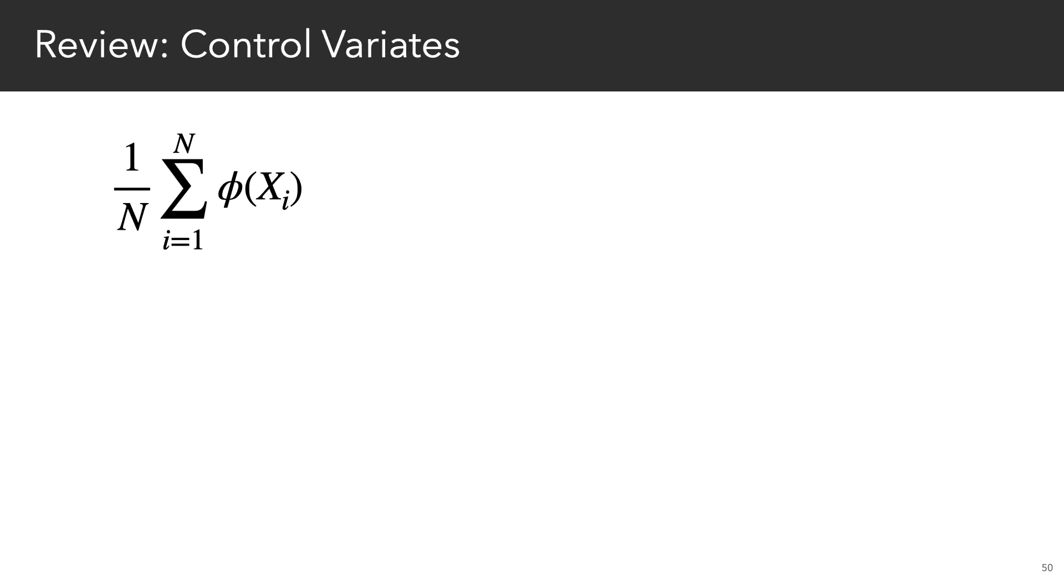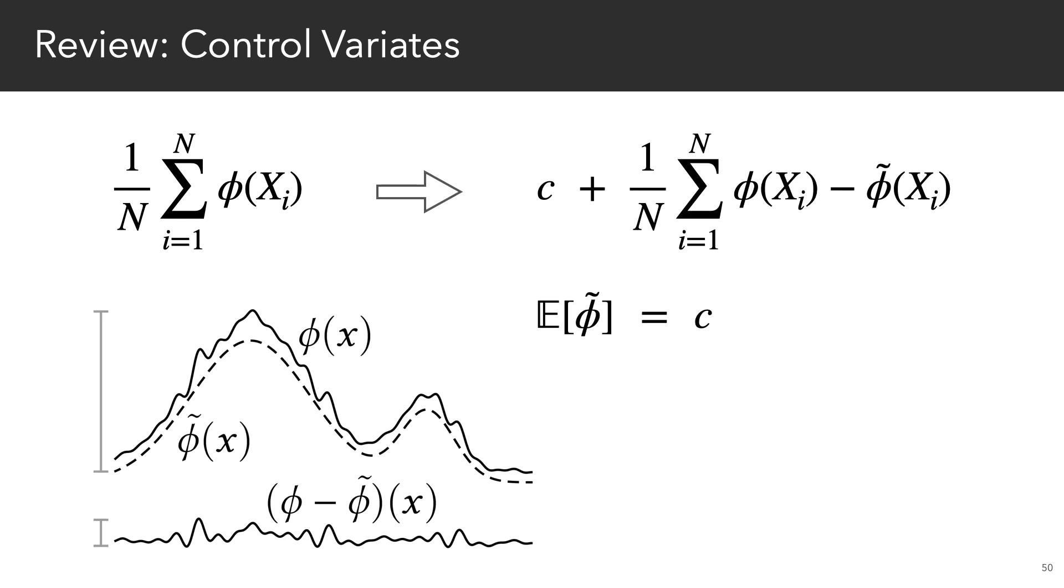Another important tool for variance reduction is control variates. So the basic idea here is that rather than summing up the integrand directly, we sum up the difference between the integrand and a function whose expected value is already known. And if this function is close to the integrand, then the variance goes down.